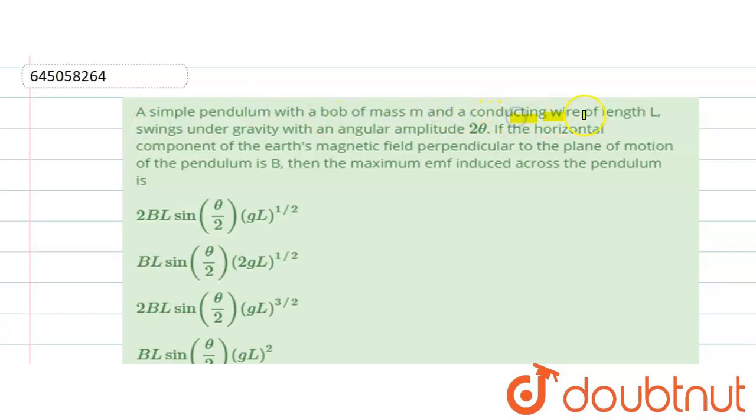of mass m and conducting wire of length L swings under gravity with angular amplitude theta. If the horizontal component of Earth's magnetic field perpendicular to the plane of motion of the pendulum is B, then the maximum induced EMF across the pendulum is?